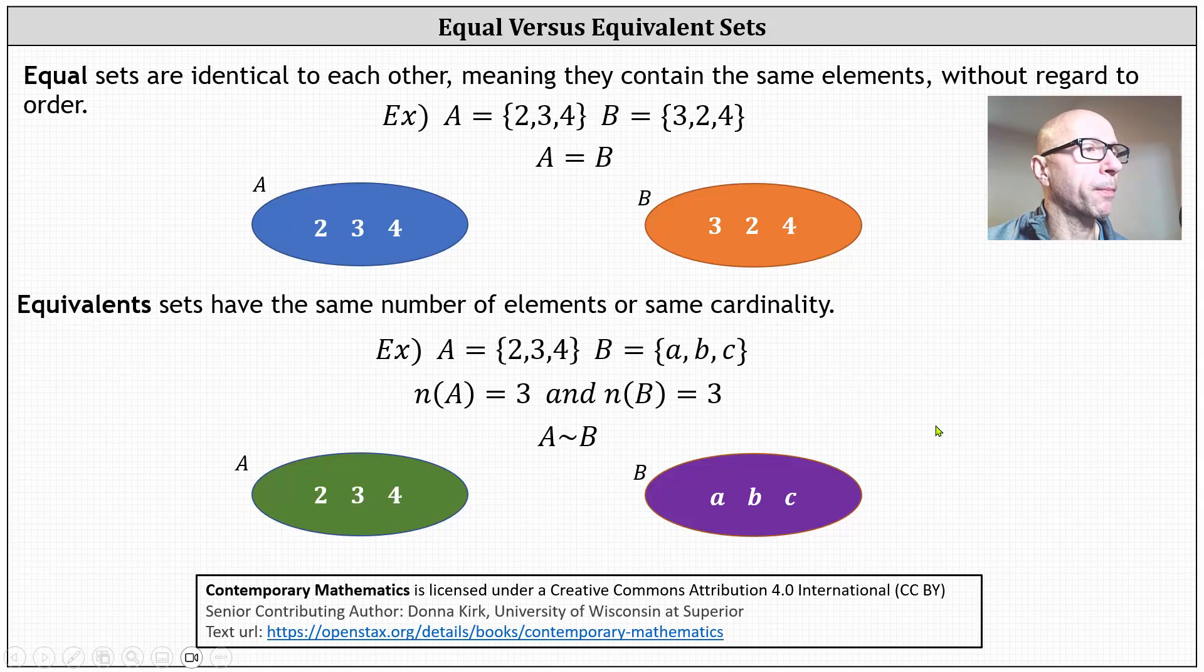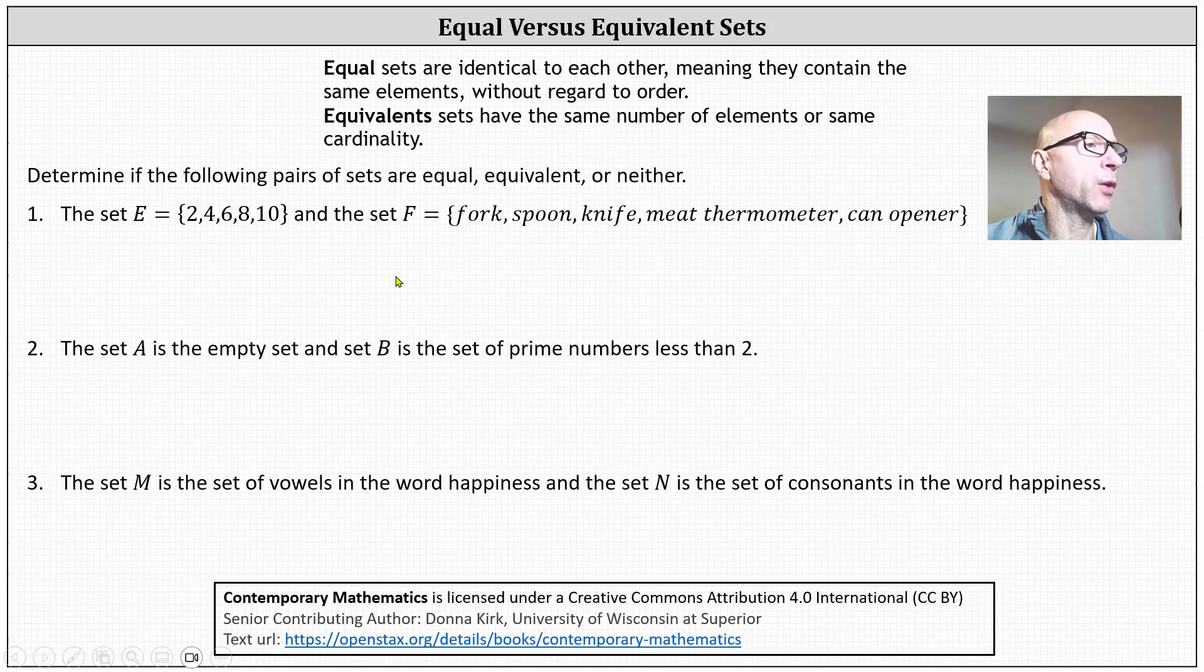Let's take a look at some more examples. We're asked to determine if the following pairs of sets are equal, equivalent, or neither. Number one, set E has the elements 2, 4, 6, 8, and 10. Set F has the elements fork, spoon, knife, meat thermometer, and can opener. Of course, the two sets are not equal because the elements in the two sets are different.